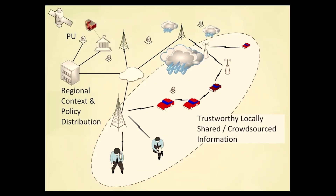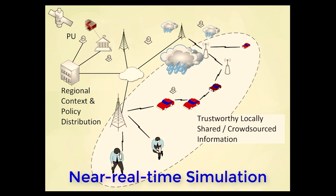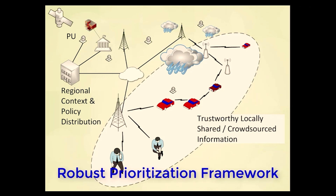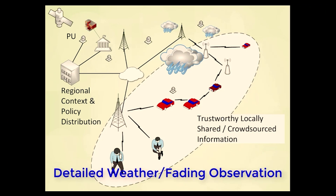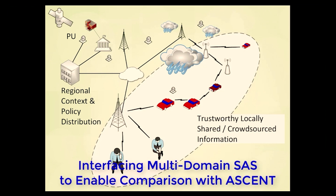We are working to extend initial development of a realistic simulation environment and integrate with the initial context-aware ASCENT dynamic spectrum access framework to include: first, near real-time simulation; second, a more advanced and robust prioritization framework; third, consideration of finer-grained weather and/or signal fading observations; and fourth, interfacing of a context-aware multi-domain spectrum access system (MDSAS) with the simulator to compare context-aware centrally managed DSA with context-aware autonomous frequency selection guided by context-contingent prioritization policy.